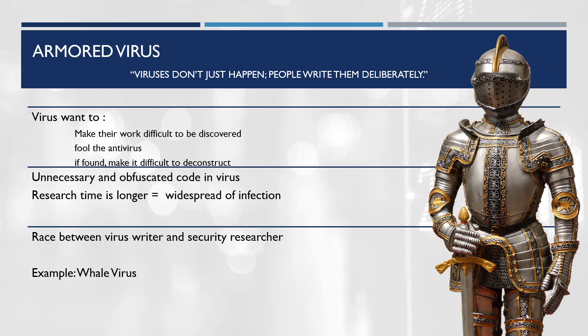Antivirus researchers find out how a virus works by examining and following the code of the virus. But an armored virus makes it hard to disassemble the virus, and this gives the virus more time to propagate itself before researchers can actually create countermeasures.